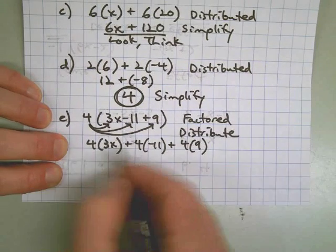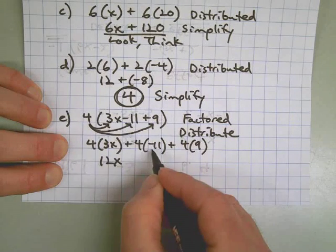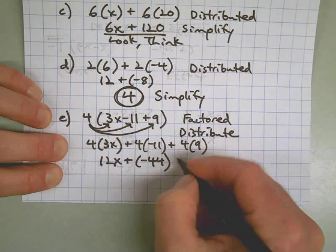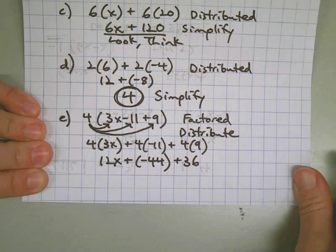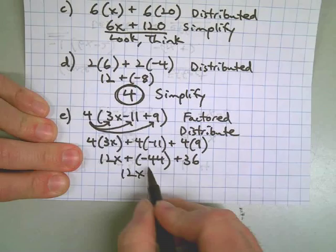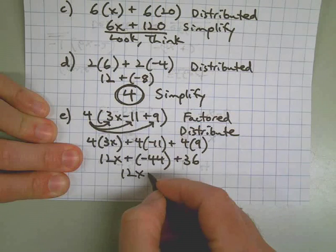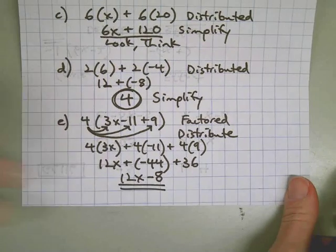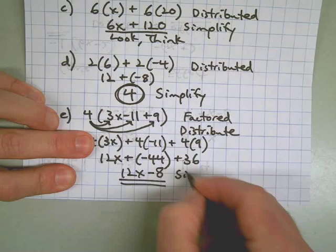We need to get to simplified form. Four times 3x makes 12x. Four times negative eleven makes negative forty-four. And four times nine makes thirty-six. You can check it with your calculator — I'm doing this mentally. Finally: twelve x's, forty-four negatives, and thirty-six positives makes negative eight. I look and think about it — can I do anything else? No, I cannot. This is done. It is simplified.